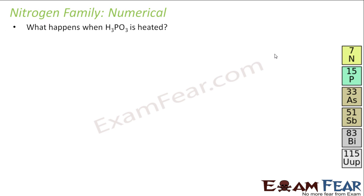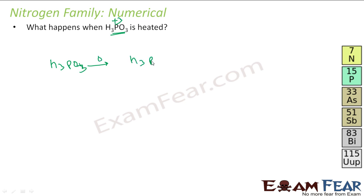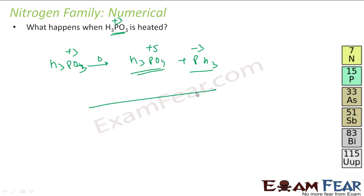The next question: what happens when H3PO3 is heated? H3PO3 has an oxidation number of +3, which is in the intermediate range, so it undergoes disproportionation. On heating, H3PO3 becomes H3PO4 and PH3. H3PO4 has oxidation state +5, PH3 has −3, and the starting material was +3 — this is the disproportionation reaction.